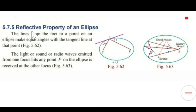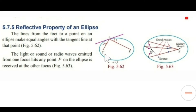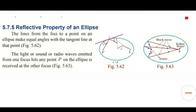Now let us see the reflective property of an ellipse. The lines from the foci to a point on an ellipse make equal angles with the tangent line at that point. We draw two lines from S and S dash to the point P. If we draw a tangent at point P, these two lines make equal angles with that tangent line — that means angle alpha and beta are equal.